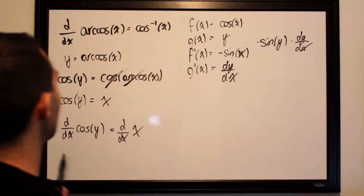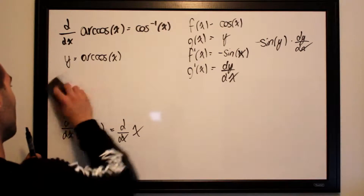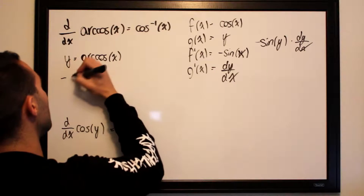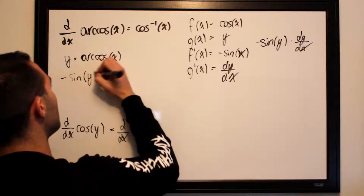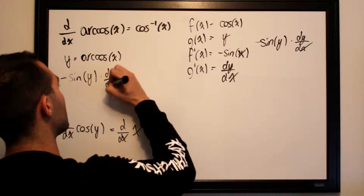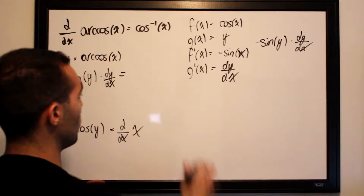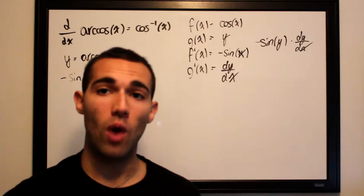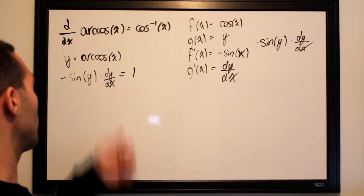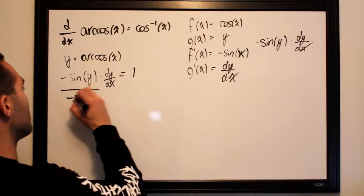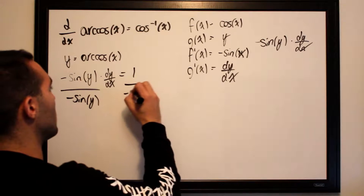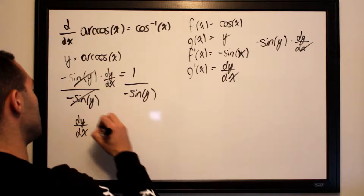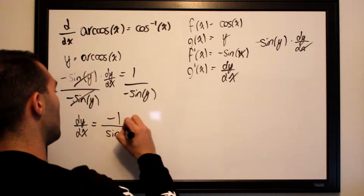Let's clean this up. We have negative sine of y times dy/dx equals 1. To isolate dy/dx, we divide both sides by negative sine of y, leaving us with dy/dx is equal to negative 1 over sine of y.